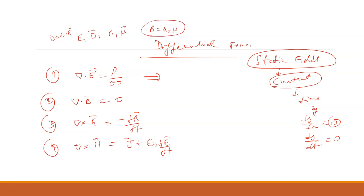I have discussed the meaning of all these terms in my previous video lectures. So del dot E equals rho by epsilon naught will remain the same, since there is no field term varying with respect to time. Del dot B equals zero also remains unchanged. For Faraday's law, since B is constant, dB by dt equals zero, so del cross E equals zero.